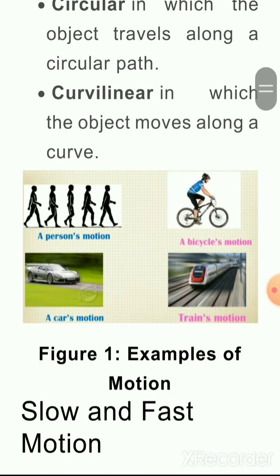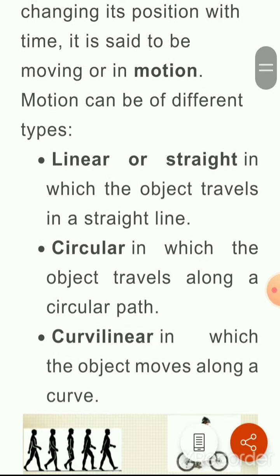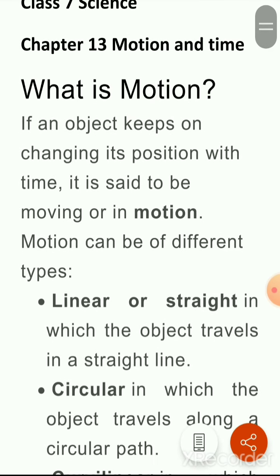Here is the diagram — examples of motion. आप person motion देख सकते हो, bicycle motion, car motion, train motion. Motion का definition यही होता है — जैसे आप जब खड़े होते हो तो वो आपकी rest position होती है। जब आप four steps चल के अपनी position change करते हो, यहां से वहां जाते हो, that is called motion. If an object keeps on changing its position with time, it is said to be moving or in motion.